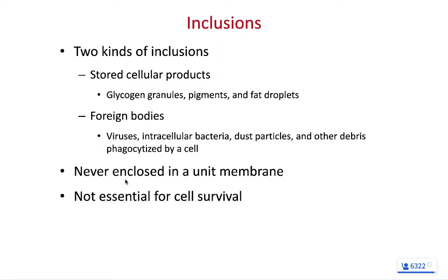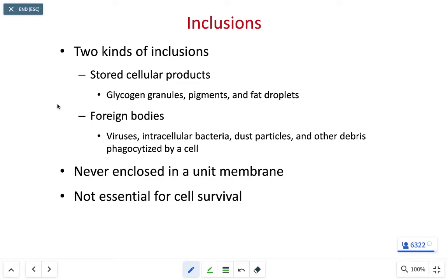We also have inclusions in the cell — think of them as storage vesicles. The most well-known is the central vacuole within a plant cell, a giant blob of water stored in the middle. Human cells typically won't store water like plant cells do; instead, we store glycogen, pigments, or fats, depending on the cell type.